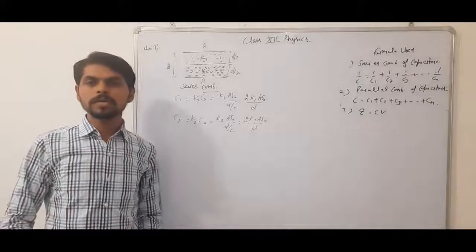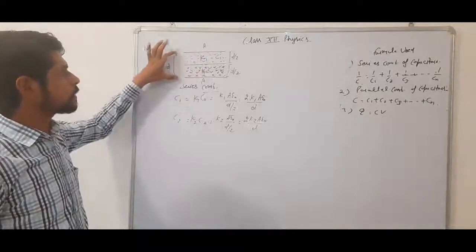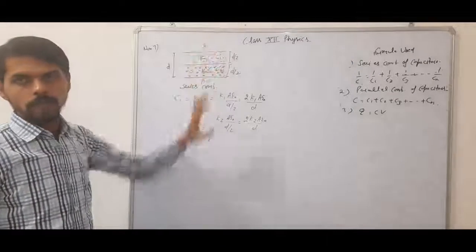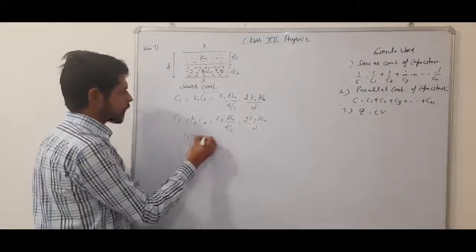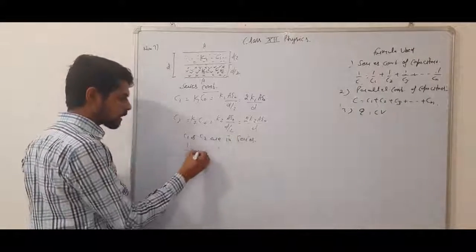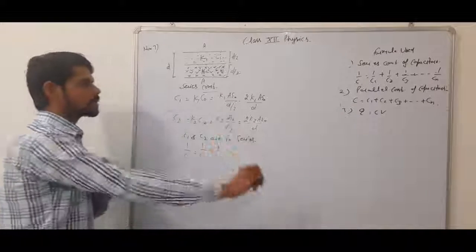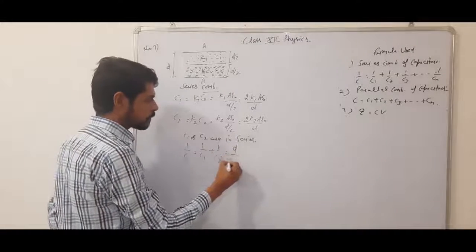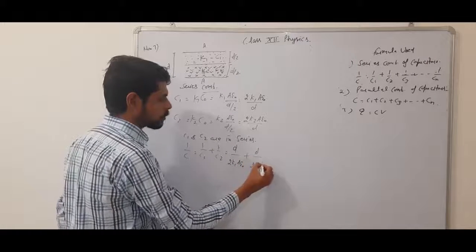Now they are in series because they are made up of dielectric constants which are filled in the capacitor separating the distance into two equal halves. For series combination, 1 by C equals 1 by C1 plus 1 by C2, which is D by 2 K1 A epsilon naught plus D by 2 K2 A epsilon naught.